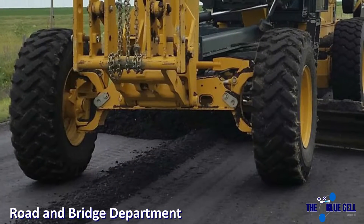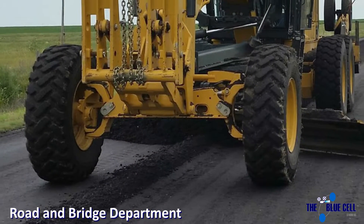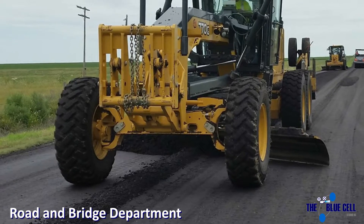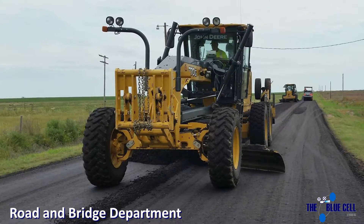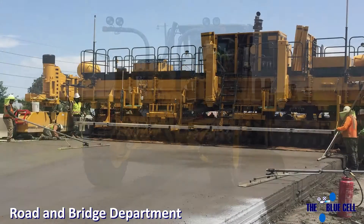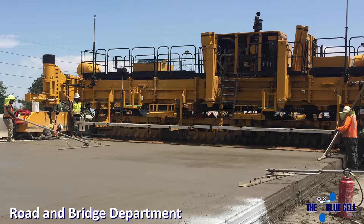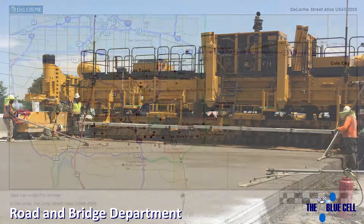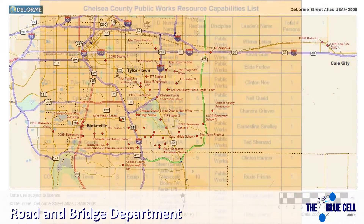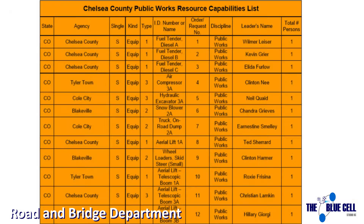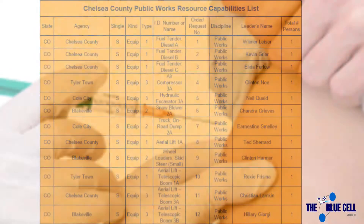The Road and Bridge Department is tasked with maintaining the roads and bridges within the county while providing a safe, well-maintained road for individuals to travel every day. The Chelsea County Road and Bridge Department operates out of five divisions, each corresponding with the County Commission District. Detailed resource lists of Road and Bridge resources can be found on the website.